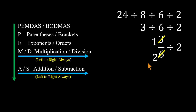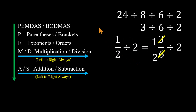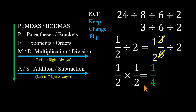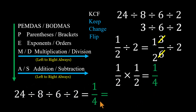So the problem becomes 1 half divided by 2. Here's where the KCF rule comes in — Keep, Change, Flip. Keep the first fraction as it is. Change the division sign to multiplication. Flip the second number, 2, as 1 half. So 1 half divided by 2 becomes 1 half times 1 half. That equals 1 fourth. The correct answer is 1 over 4, or in decimal form, 0.25.